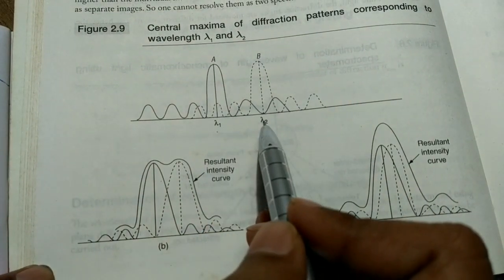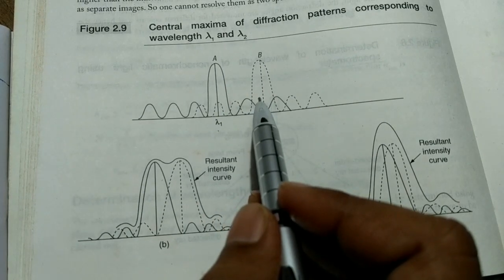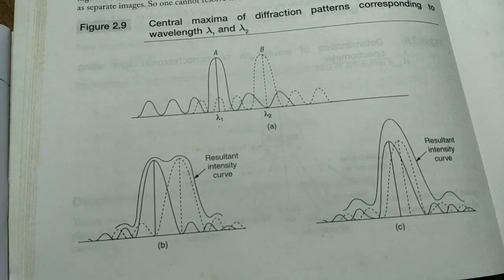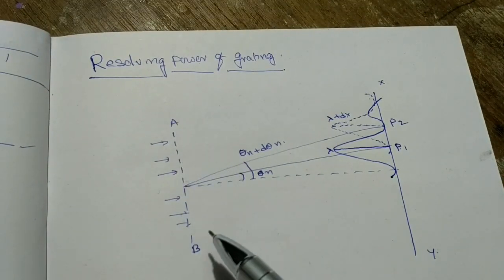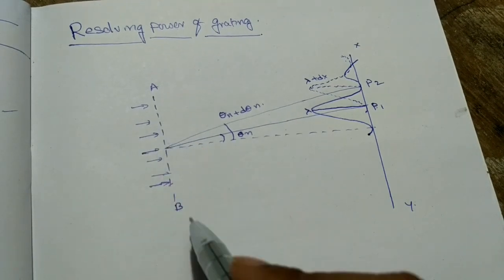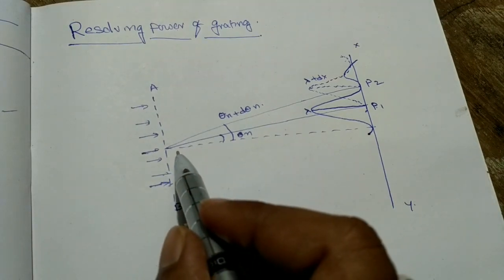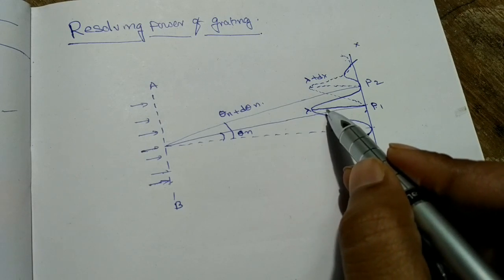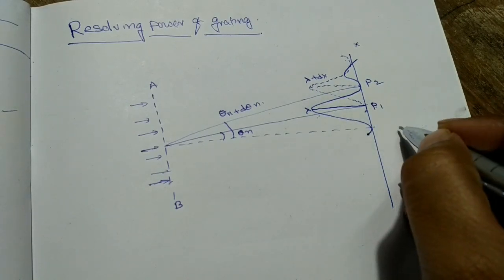The wavelengths lambda-1 and lambda-2 are very nearby wavelengths — for example, 5000 angstroms and 5010 angstroms, with a difference of about 10 angstroms. Now for the equation part: AB represents a grating with N number of slits. A parallel beam of light is incident on this grating, forming fringes on screen XY. P1 is the principal maxima of the first wavelength and P2 is the principal maxima of the second wavelength, considering the just resolved condition.